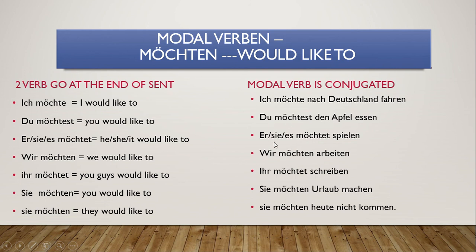Du möchtest dann nach Hause. Er/sie/es möchte spielen. Spielen is our second verb, so we haven't conjugated it. Möchte is the modal verb, so we have conjugated that — with all three third-person personal pronouns: er (he), sie (she), es (it).